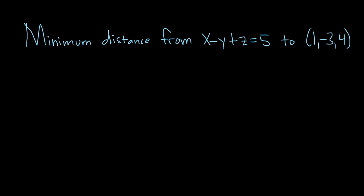In this problem we have to find the minimum distance from the plane x minus y plus z equals 5 to the point 1, negative 3, 4. Let's try to work this out.